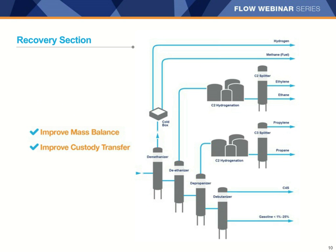Moving beyond the furnace section to recovery, the main goal here is to separate the products. Mass balance is important in this area, as well as custody transfer of the end products. For the sake of time during this webinar, we will really be discussing two of those applications — optimizing the steam to carbon ratio in the furnace section, and custody transfer of the final products.